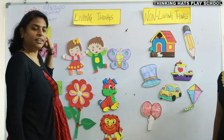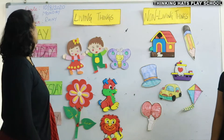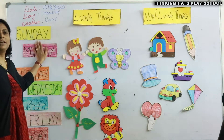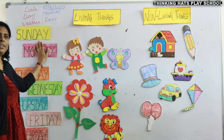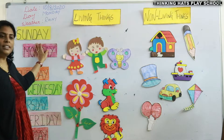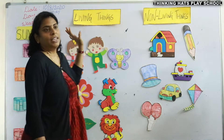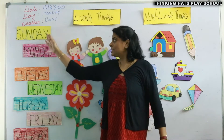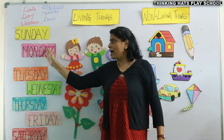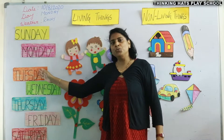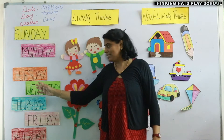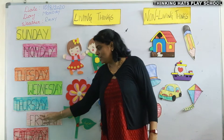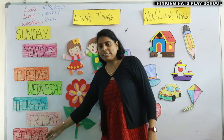It's been raining from morning continuously. And let us learn some days of the week. How many days are there in a week? There are 7 days in a week: Sunday, Monday, Tuesday, Wednesday, Thursday, Friday and Saturday.